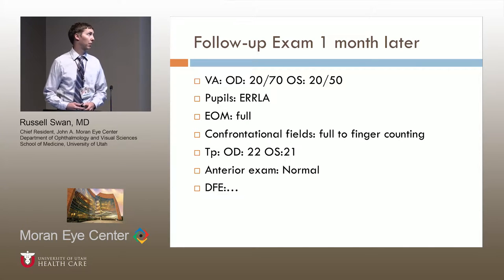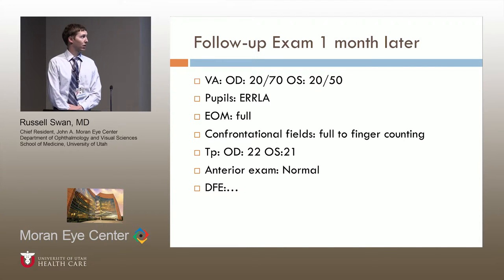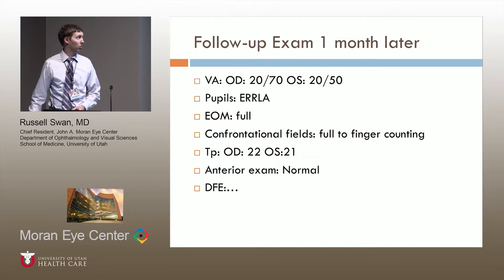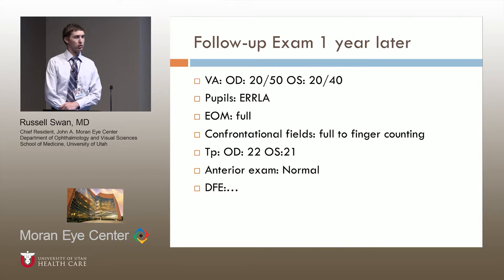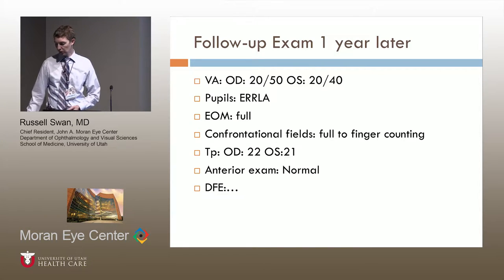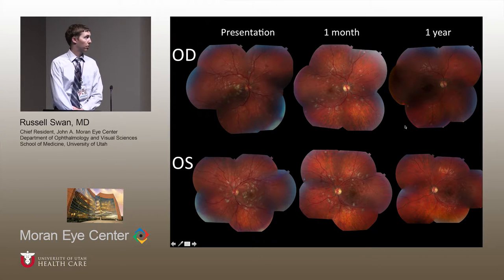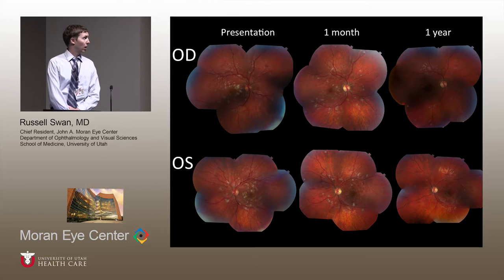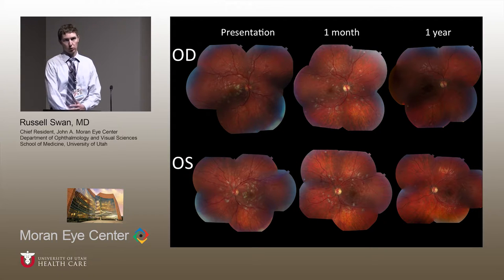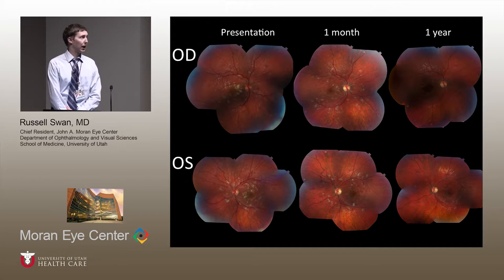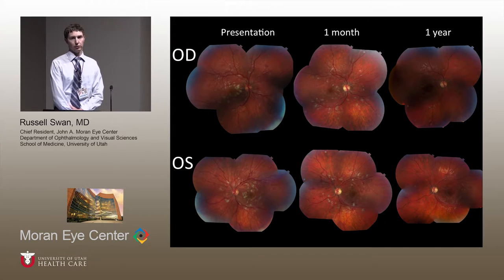From an ophthalmologic standpoint, at her one-month follow-up, her visual acuity had improved significantly to 20/70 and 20/50. At her one-year follow-up, her vision improved slightly more to 20/50 and 20/40. Looking at the color fundus images — right eye on top, left eye on the bottom — there is dramatic improvement at one month with some residual cotton wool spots and intraretinal hemorrhages, but significantly improved with IV steroids and oral prednisone. Near complete resolution of retinal findings at one year, with perhaps some decreased foveal reflex remaining.